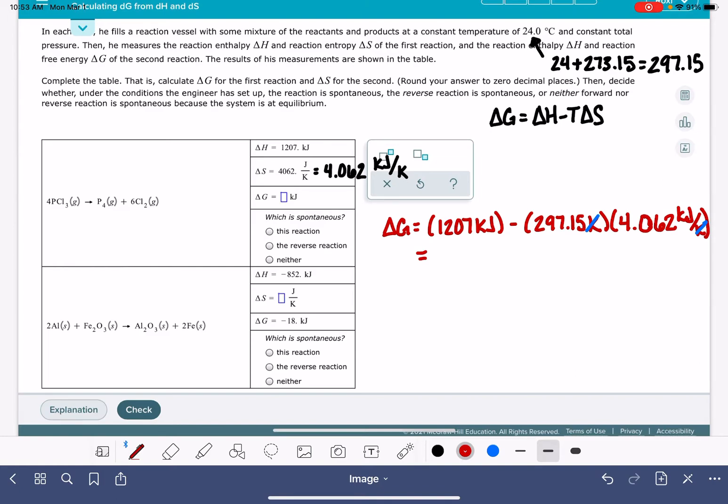1207 minus 1207. This works out to be 1207 kilojoules minus this term here is also 1207 kilojoules. So this is zero. The delta G is zero kilojoules.